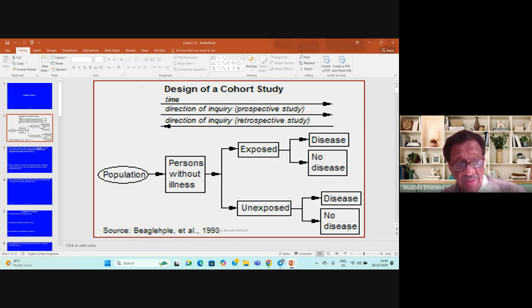This slide is from Beagle Hall 1993, illustrating the cohort study design. We have the population, then people who are free of disease. Some of them are exposed to the disease agent and others are not exposed. We follow them over a period of time to find those who develop the disease.